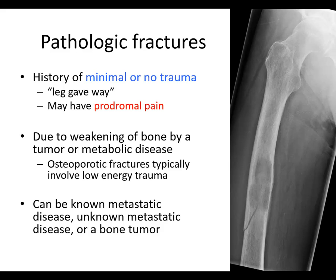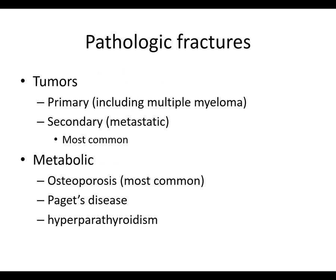A tumor could be known metastatic disease — somebody with known metastatic breast cancer, for example — or unknown metastatic disease where a pathologic fracture is the first presentation. It could also be a primary bone tumor like osteosarcoma, or myeloma, which is certainly one of the more common ones. Tumors are either primary or secondary. Primary bone tumors are much less common, although myeloma in a certain age group is somewhat common. By far, most of what we see are metastatic disease in older patients. Metabolic etiologies include mostly osteoporosis, although Paget's and hyperparathyroidism are not completely uncommon.